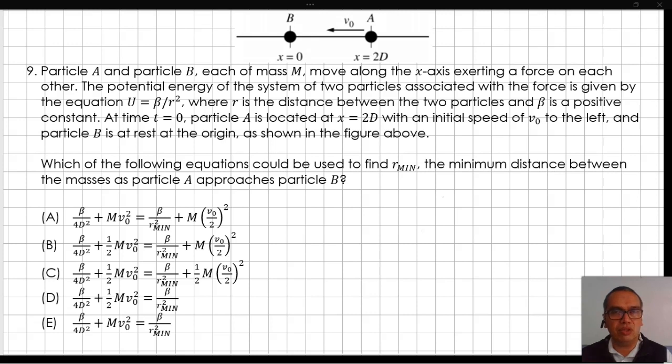At time t equals zero, particle A is located at x equals 2d with an initial speed of v0, and particle B is at rest at the origin, as shown in the figure above.